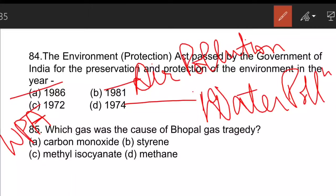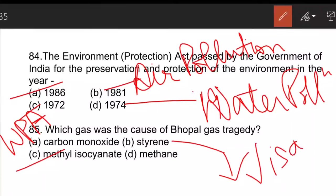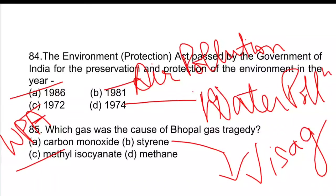The next question: which gas was the cause of the Bhopal gas tragedy? The correct answer is C — methyl isocyanate. This is also relevant to the recent Vizag gas tragedy in Andhra Pradesh, where styrene gas was the cause.